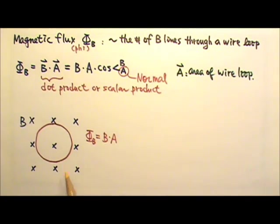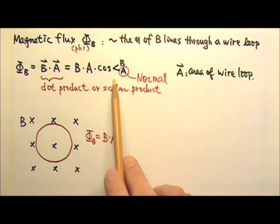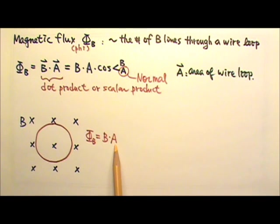Most of the time, the problems we see involve wire loops in this kind of orientation, when it is convenient for us to just use 1 for the cosine part, and the flux would just be B times A.